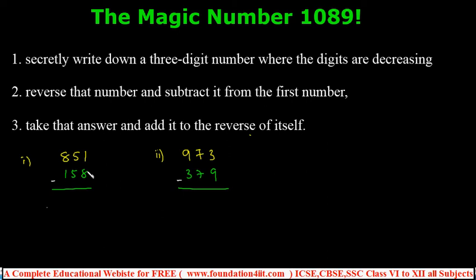851 minus 158: 11 minus 8 is 3, then 9, then 6. We get 693. Now take this answer and add it to its reverse. Reverse 693 to get 396 and add.